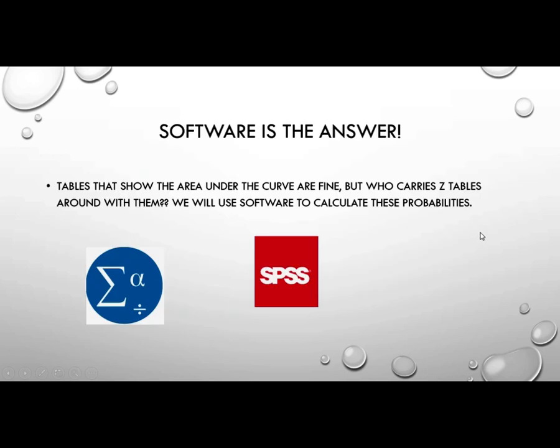We can do that until the cows come home. But what we're going to do eventually is we're going to move into having the computer do it for us. Tables that show the area under the curve are fine, but nobody carries these tables with them around in life. So we're going to use software to calculate these probabilities.